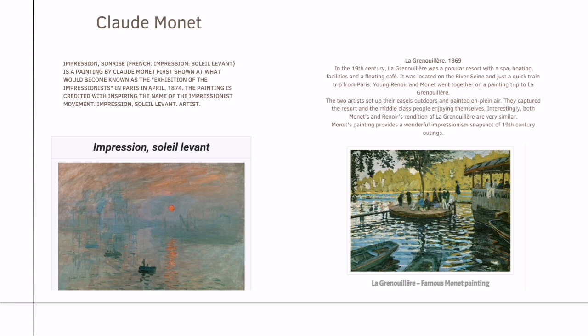The second work is La Grenouillière. In the 19th century, La Grenouillière was a popular resort with a spa, boating facilities, and floating cafe. It was located on the River Seine, just a quick train trip from Paris. Young Renoir and Monet went together on a painting trip to La Grenouillière.